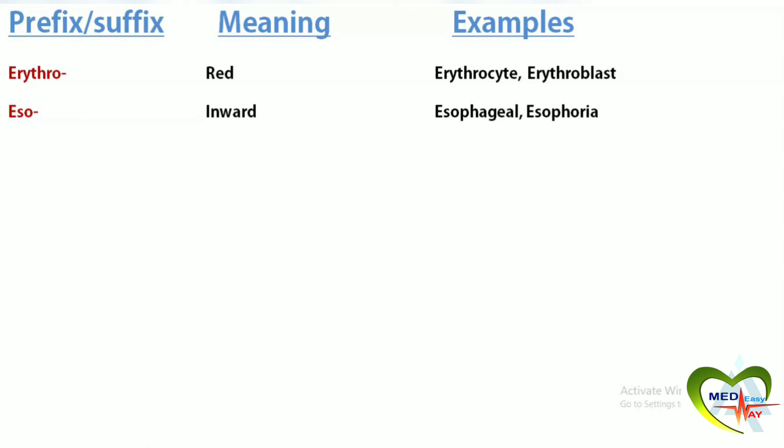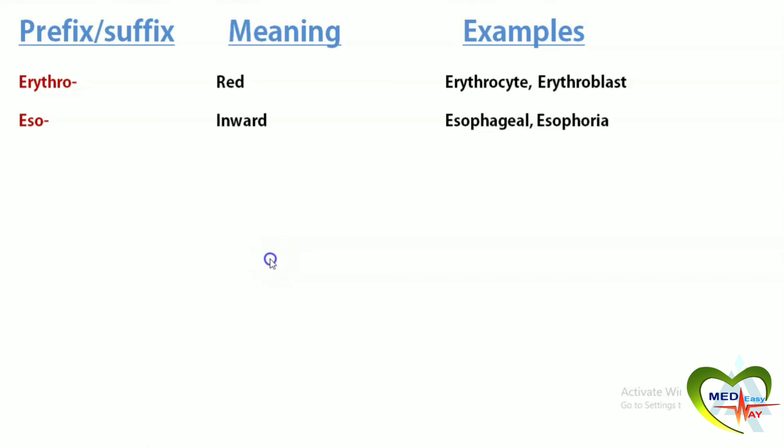Eso means inward. Esophageal relates to the esophagus. Esophoria is an eye condition involving inward deviation of the eye. Esthesia means nervous sensation. Esthesiometry is a device used for measuring the tactile sensitivity of the skin.